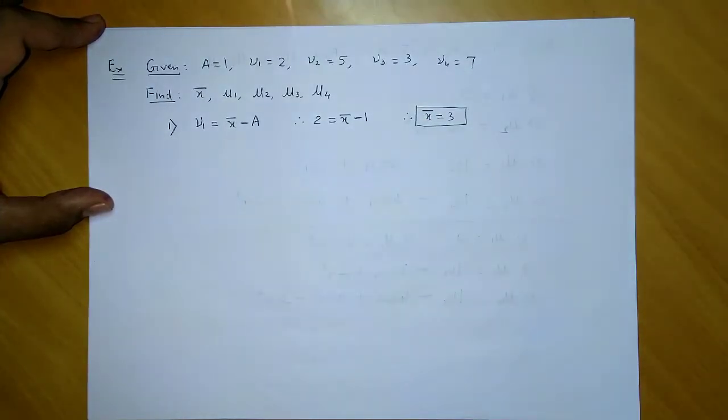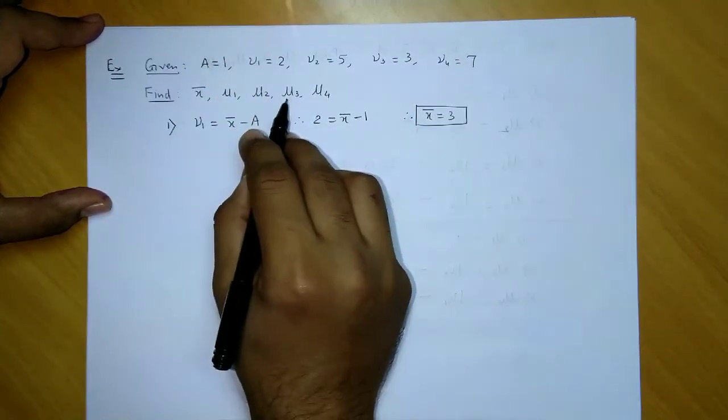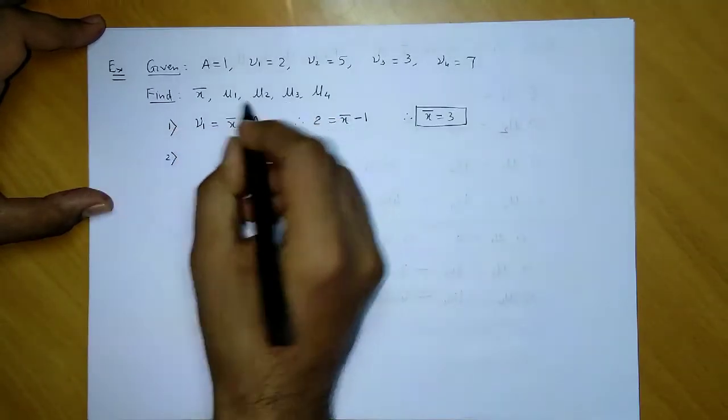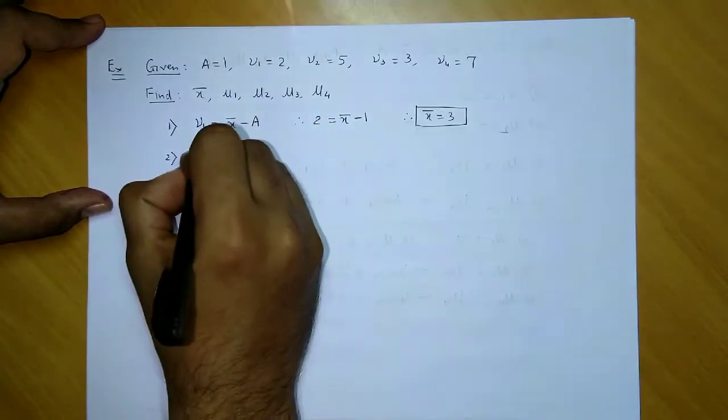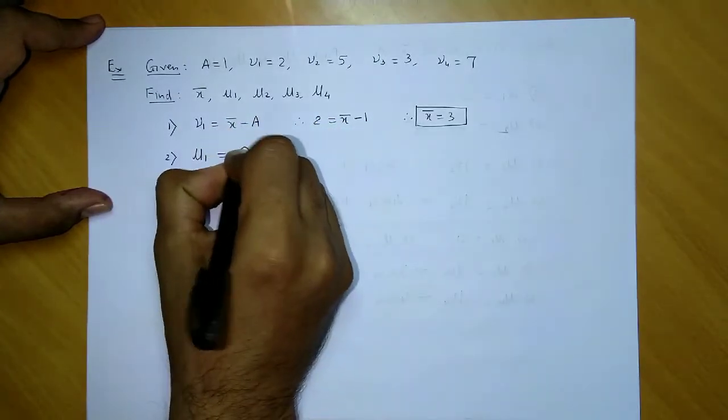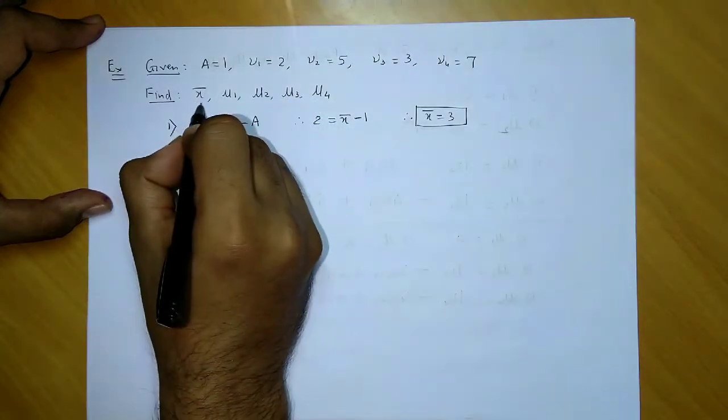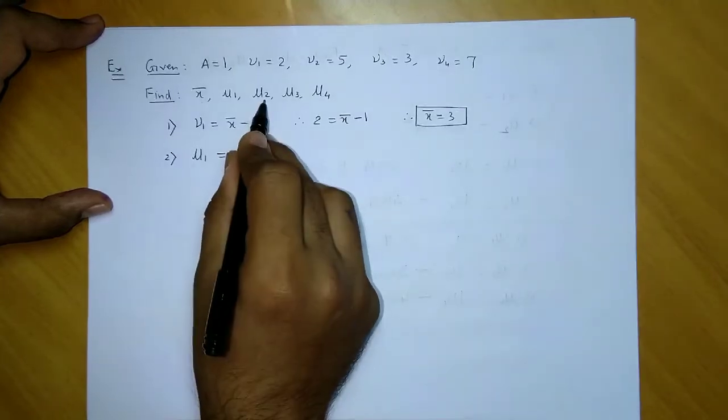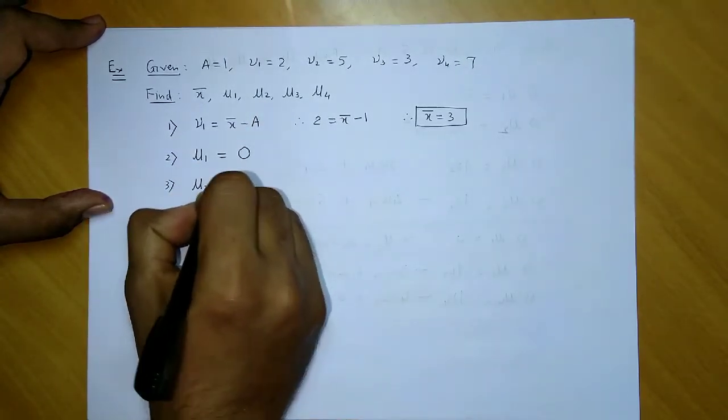Now our conversions actually start—we find μ1, μ2, μ3, and μ4. As we know, the first central moment is always zero, so we can directly write μ1 = 0.